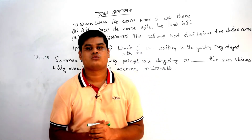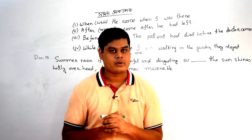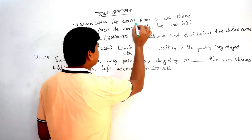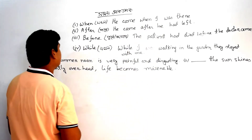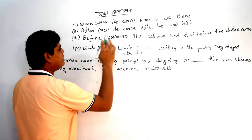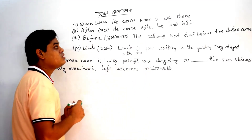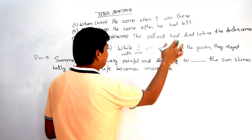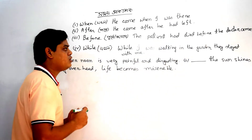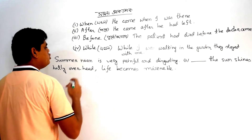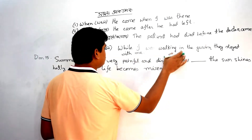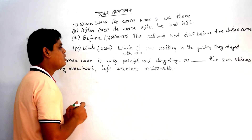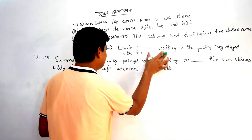The second question — which sentence? He came when I was there. He came after he had left. The patient had died before the doctor came. While I was walking in the garden, I was able to stay. So that is the past continuous tense.